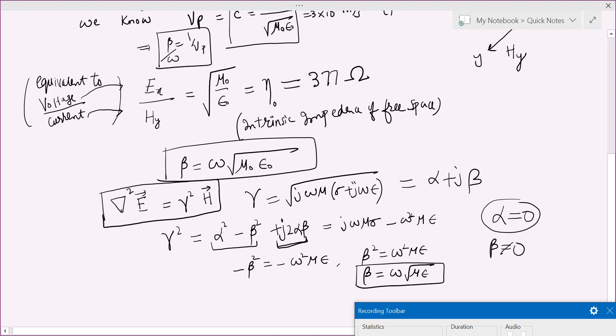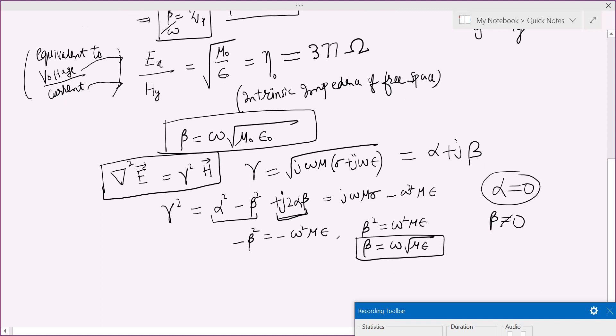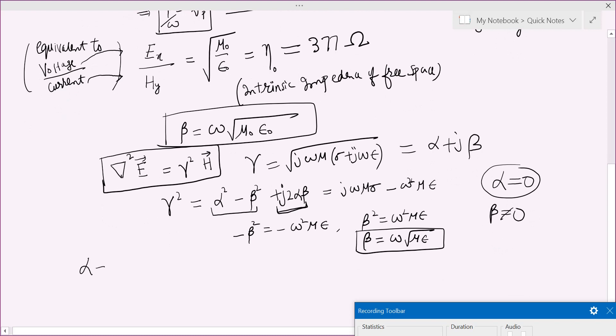So if you recall, at that time we defined these two terms. Actually, alpha is called attenuation constant, and this beta is called phase constant.